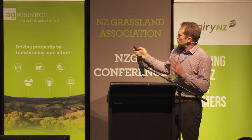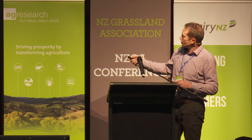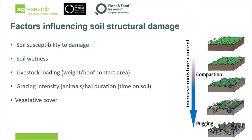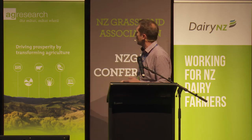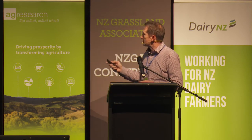Soil wetness: absolutely key. But also important is livestock loading — that's in terms of the weight that comes through from the hoofs, which is the difference between cows and sheep, for example. Grazing intensity — how many animals are in a given area and how long they're there for — are strong regulators of the damage you'll see. And vegetative cover, which has come up in a few talks today about its importance for other reasons, so there are a whole lot of synergies there.